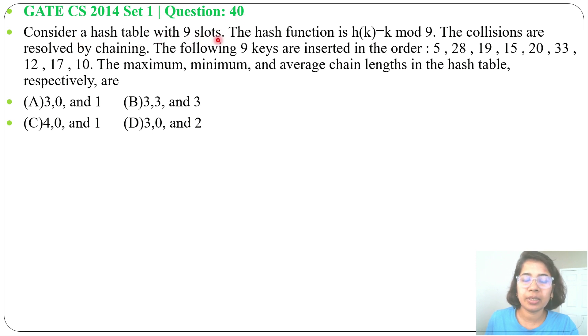Consider a hash table with 9 slots. The hash function is h(k) = k mod 9. The collisions are resolved by chaining. The following 9 keys are inserted in the order: